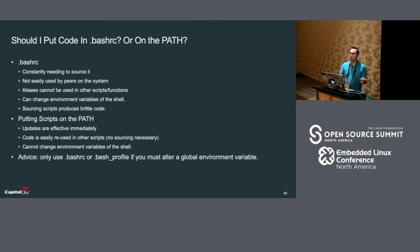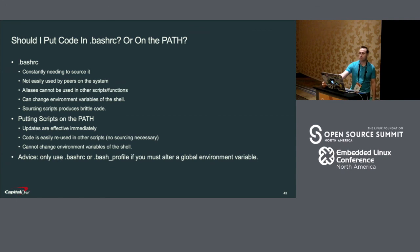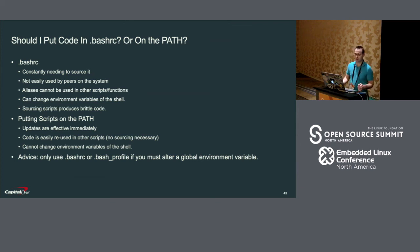Should I put code in bashrc or on the path? Oftentimes people just put aliases and functions into their bashrc file, or in a script that bashrc sources. I don't recommend doing this. Updates are not automatically detected, so you're forced to constantly be sourcing your updates. Instead, you should prefer to put your scripts onto the path — your updates are effective immediately, and it's much easier to reuse that code in other functions.